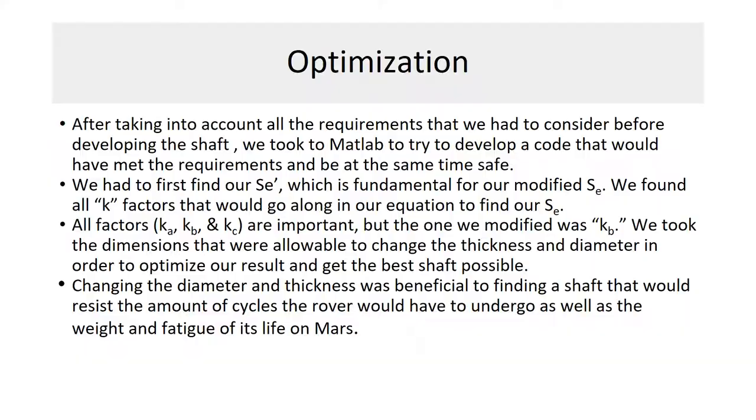After taking into account all the requirements that we had to consider before developing the shaft, we took them to MATLAB to try to develop a code that met the requirements and be at the same time safe. We had to find our unmodified endurance limit, which is fundamental for a modified one. We found all K factors that would go along into an equation to find our modified endurance factor. All factors KA, KB, and KC are important, but the one we modified was the KB factor. We took the dimensions that were allowed to change the thickness and the diameter in order to optimize the result and get the best shaft possible. Changing the diameter and thickness was beneficial to finding a shaft that would resist the amount of cycles the rover would have to undergo, as well as the weight and fatigue of its life on Mars.